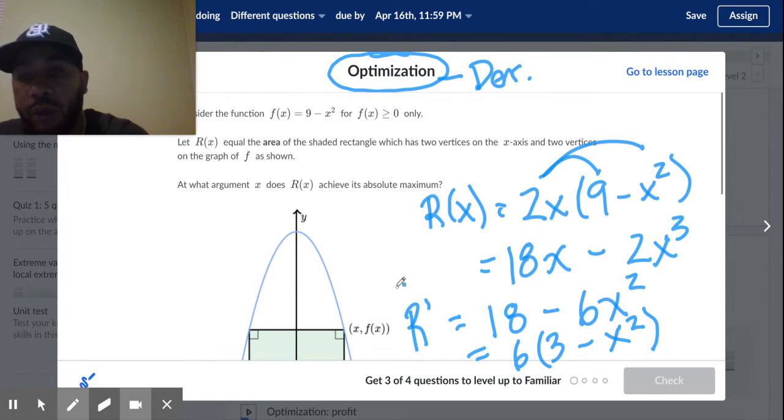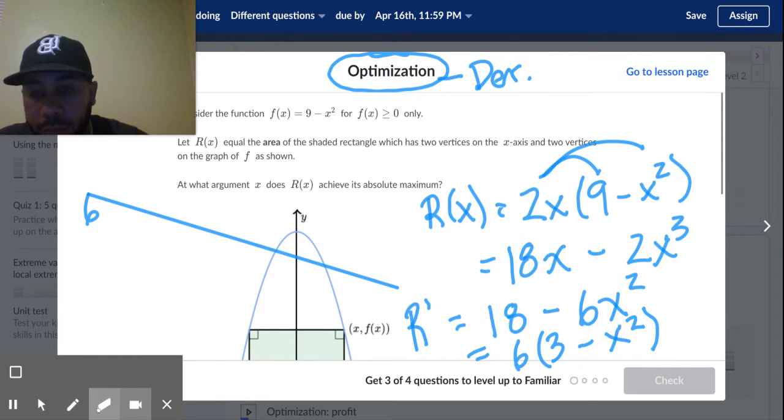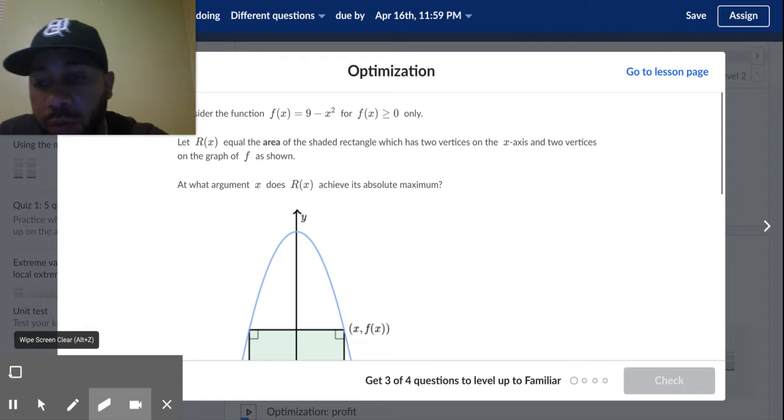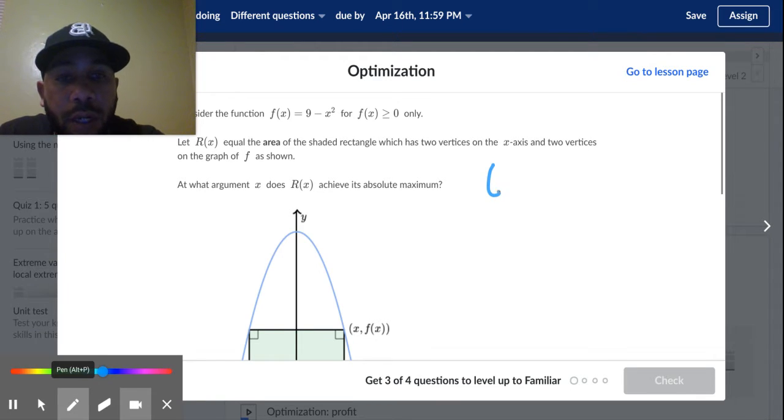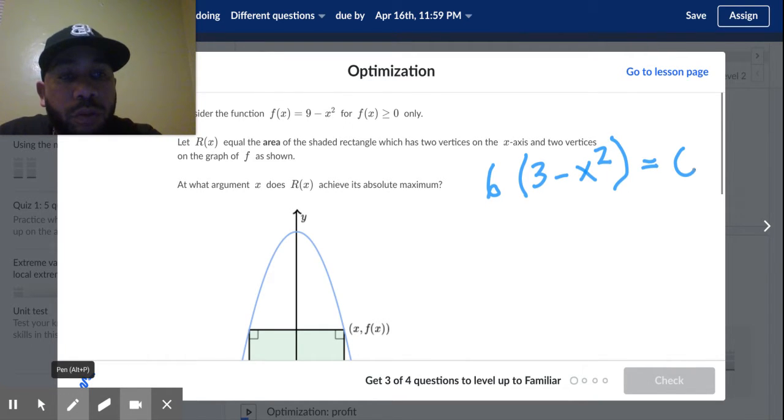Let's go ahead and erase that and let's just rewrite that now. You got to go back. I had 6(3 minus x squared), and I'm going to set that equal to zero because I want to know the max. I need to know when R prime is equal to zero. Well, what that would mean is 6 times some value equals zero. So it's not six, so this value here has to be equal to zero.